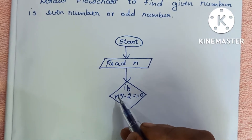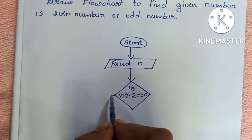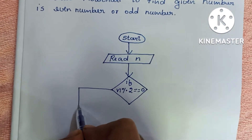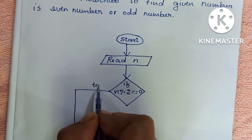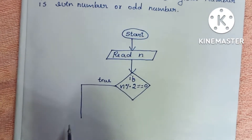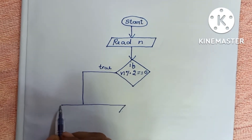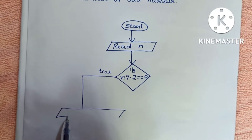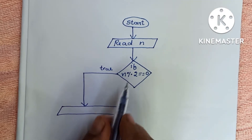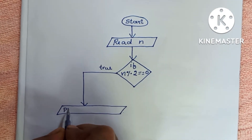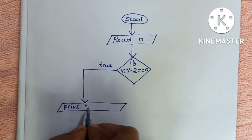If the condition N modulo 2 equals 0 is true, the given number N is an even number. We print the output: the given number is an even number. Write 'Print Even Number' in a parallelogram shape on the true branch.